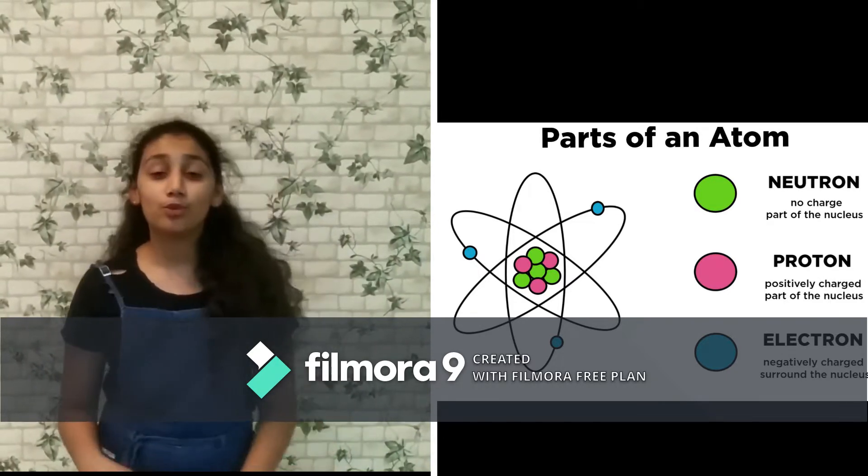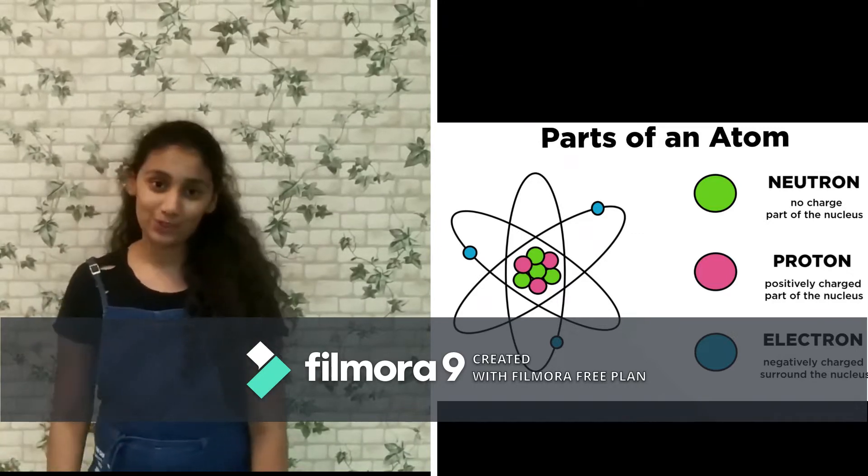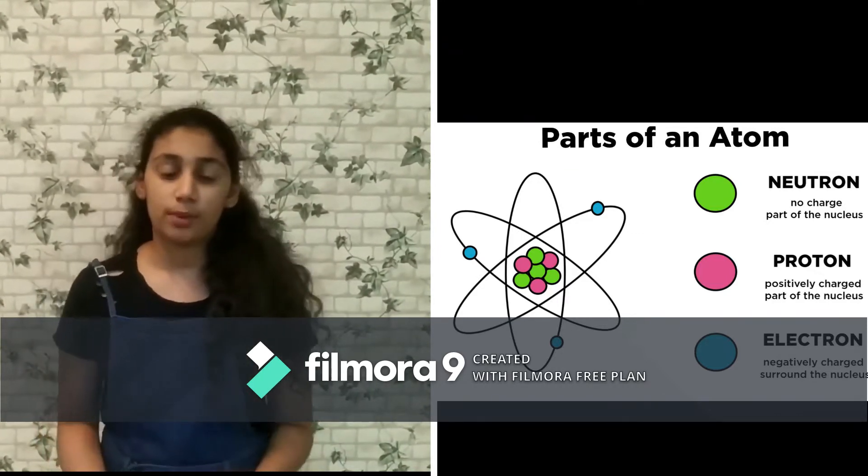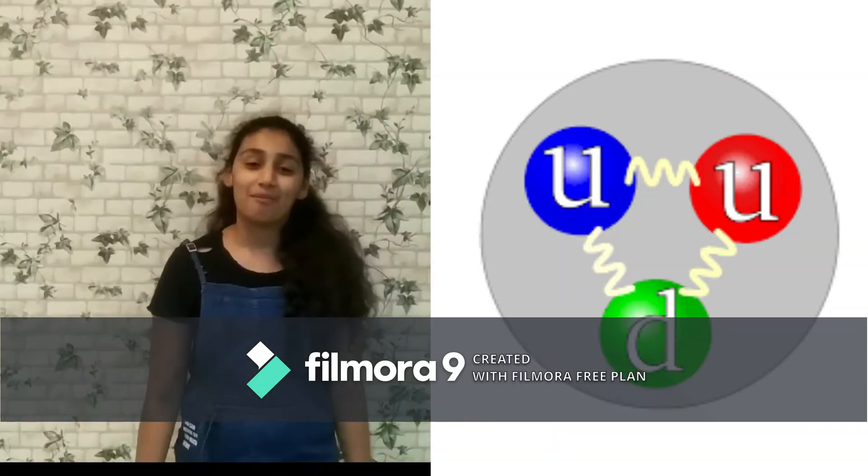We came to know that it was made up of three things: a proton, a neutron, and an electron. Then we thought that maybe they were the fundamental particles, but we were wrong again.